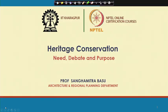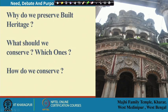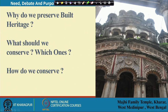Welcome. We are starting another module. Today's topic is heritage conservation: need, debate, and purpose. As we see in this image, we are able to see a temple — this is in West Midnapur, a village family temple with beautiful stucco works — but it is in a very deteriorated condition. There is not much economic affordability of the family to maintain it. It is not a listed property, meaning it is not under state or cultural heritage commission.